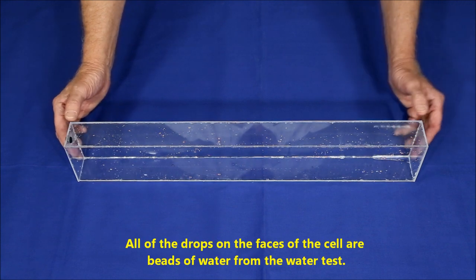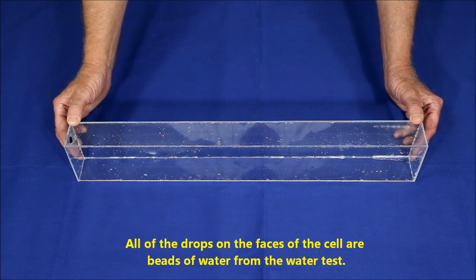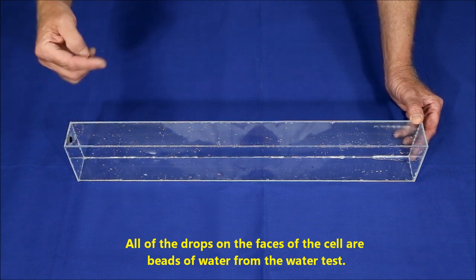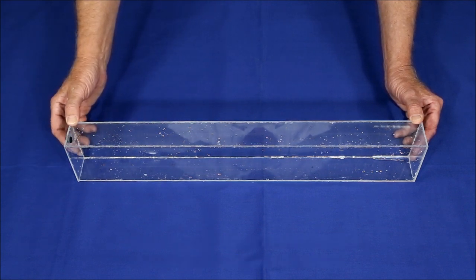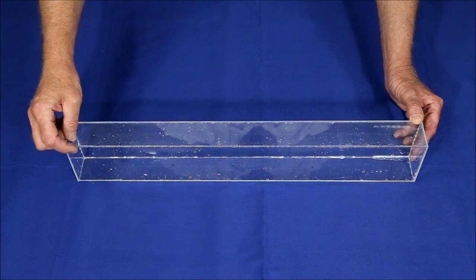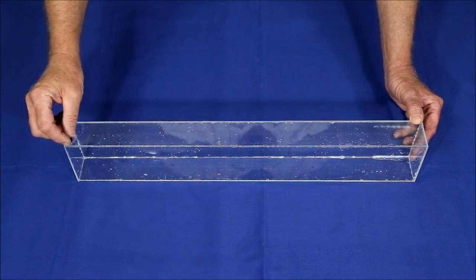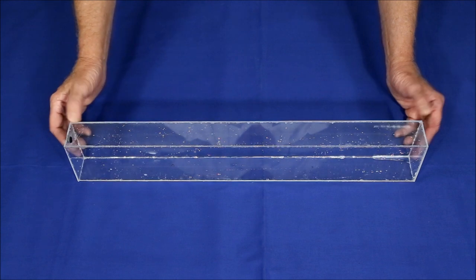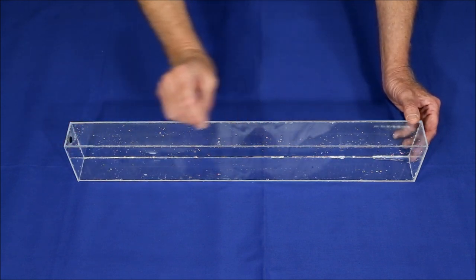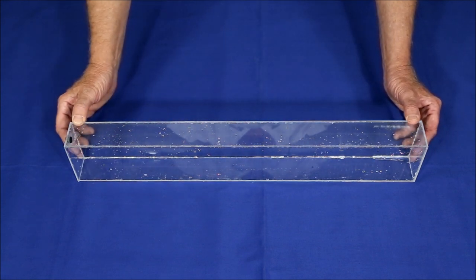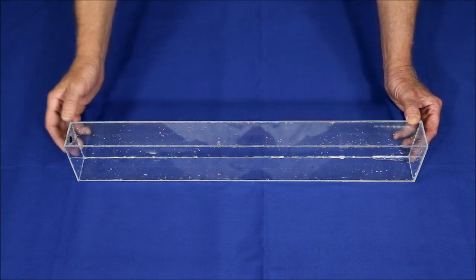I might try using a water thin cement, in which case you just tape the box together and apply the cement with a syringe to the edge and capillary action pulls it into the joint. So you don't have to be applying the thick cement like the number 16 and getting these globs which aren't too attractive.